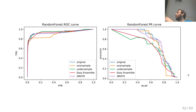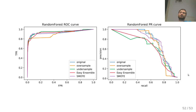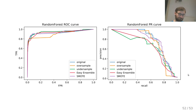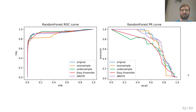These are all feasible approaches that make sense in some cases. I wouldn't usually do oversampling — I would use class weights instead. But undersampling, balanced bagging, and SMOTE are the things I would go through if trying to change my model to account for imbalanced data. That's it for today.